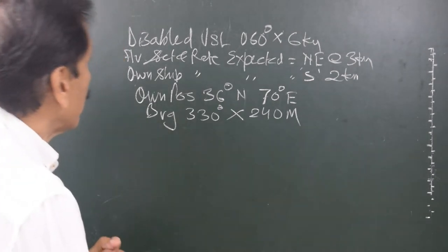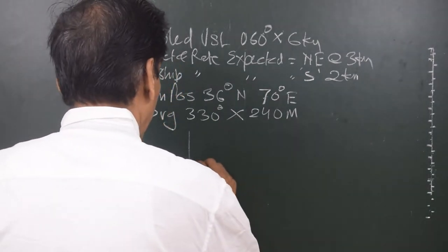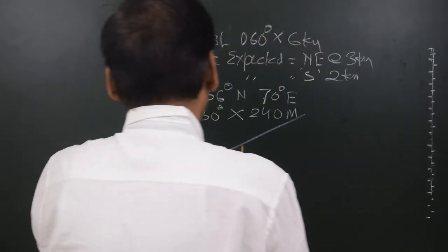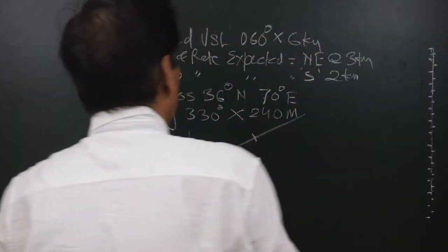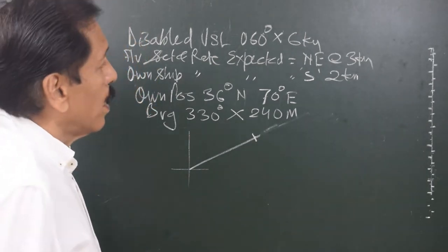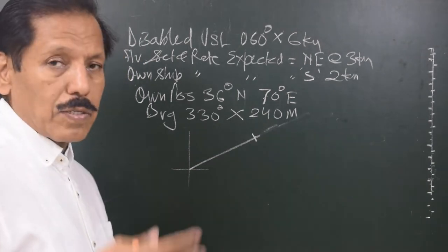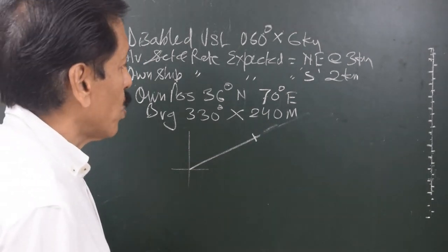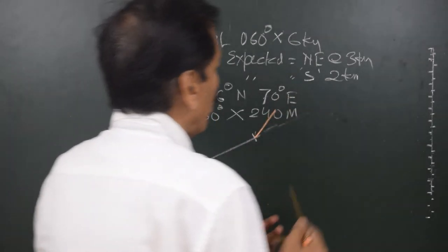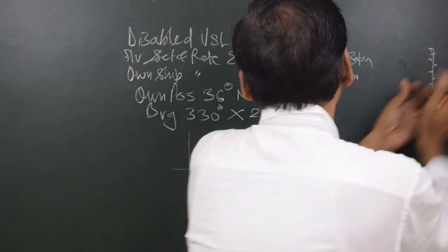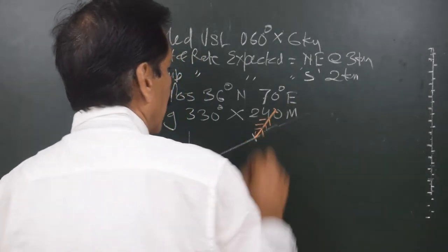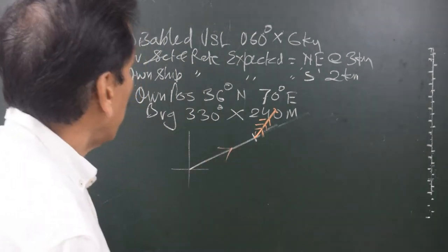For this, we plot to scale — say six miles — and then the current that the target is facing, which is northeasterly three knots, is the average current the target will face for the entire duration. So at this point we put 045° and three miles, meaning three miles in the direction of the current the target is going to face.